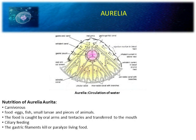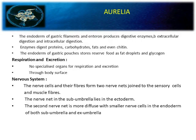The nutrition of Aurelia aurita: Aurelia is basically carnivorous. Food includes eggs, fish, small larvae, and pieces of animals. Food is caught by the oral arms and tentacles and transferred to the mouth. Ciliary feeding also occurs. Gastric filaments kill or paralyze living food. There is no specialized organ for respiration and excretion — these occur through the body surface.